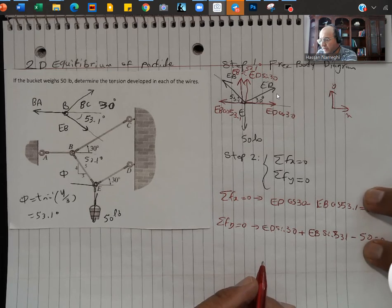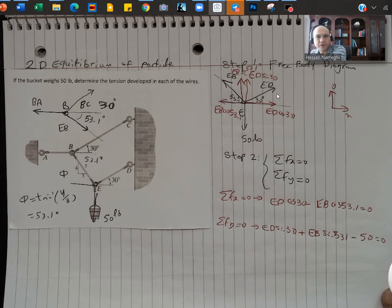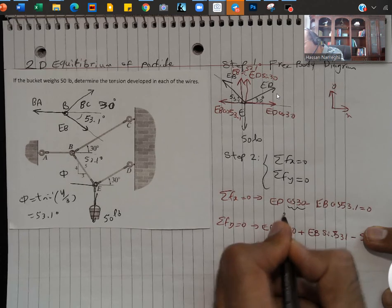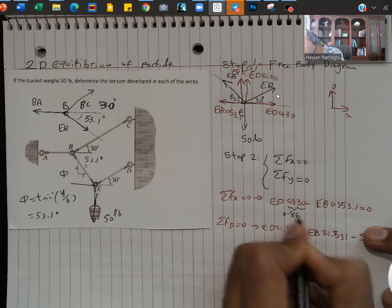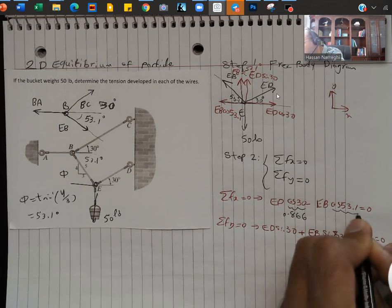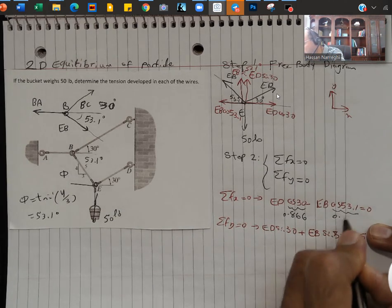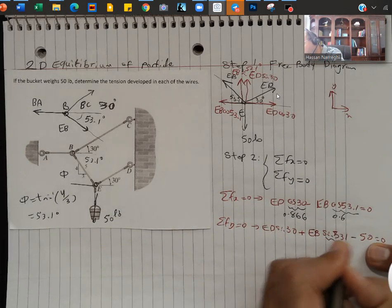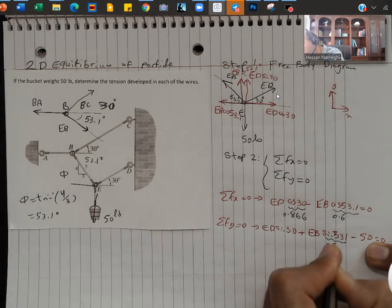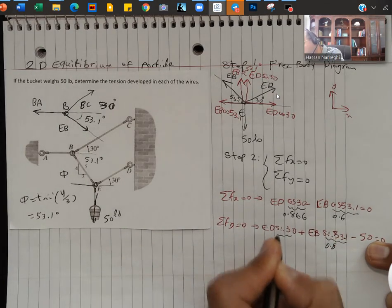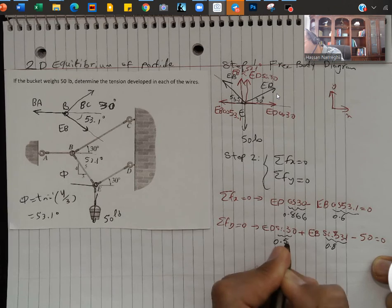So now I set up the two equations. I need to go and solve them. Cosine 30 is 0.866. Cosine 53.1 is 0.6. Sine of 53.1 is 0.8. Sine of 30 is 0.5.